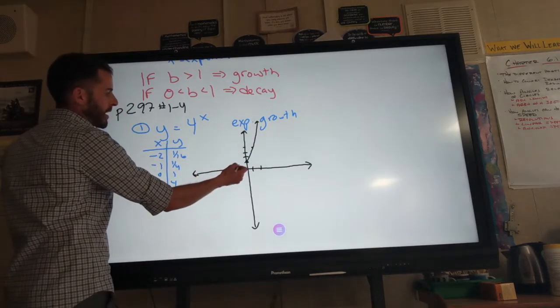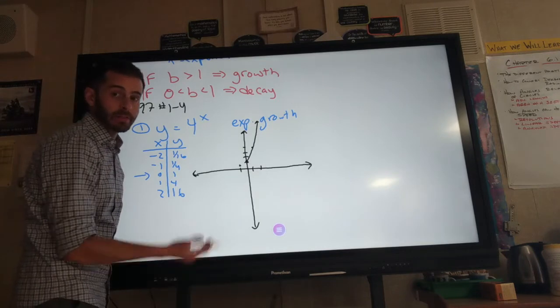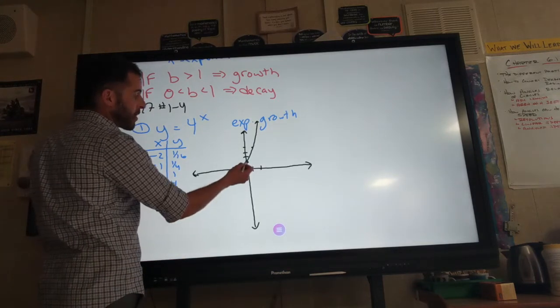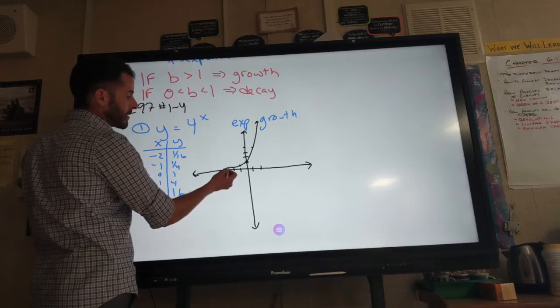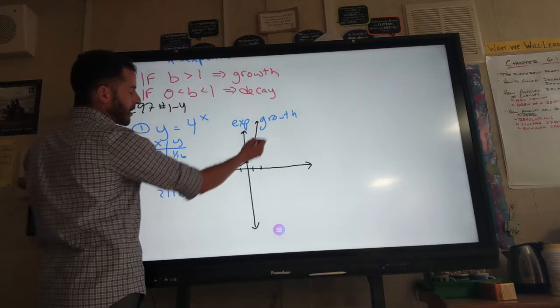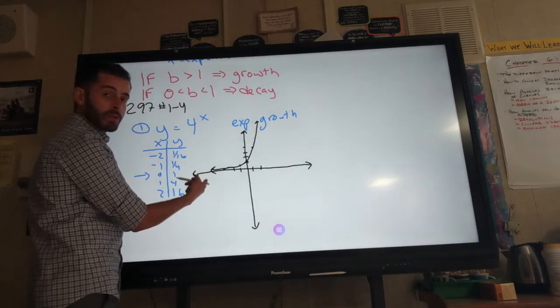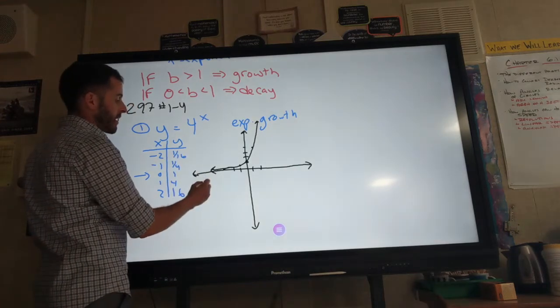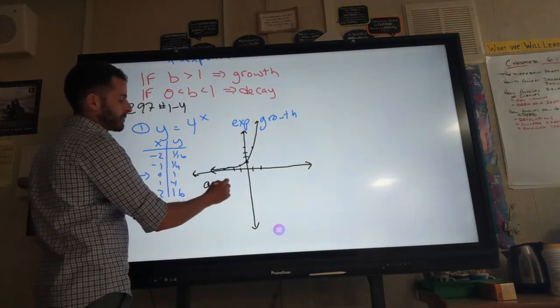I have a point at negative 1, 1 fourth. It's not accurate, you're taking a guess. And negative 2, 1/16, that's even smaller and getting close to the x-axis. Now, the tricky part is to make a curve that gets close to your x-axis but doesn't touch it. It doesn't cross it. It doesn't touch it. And that's called your asymptote.